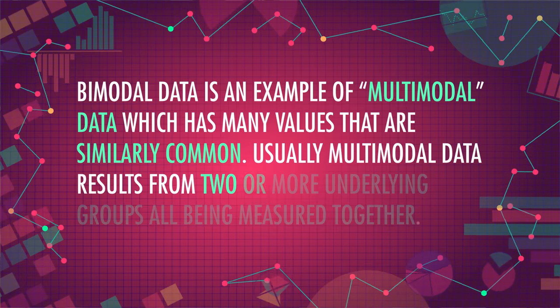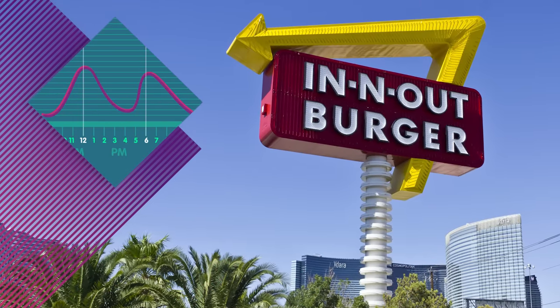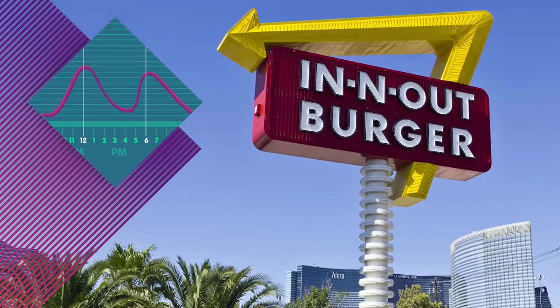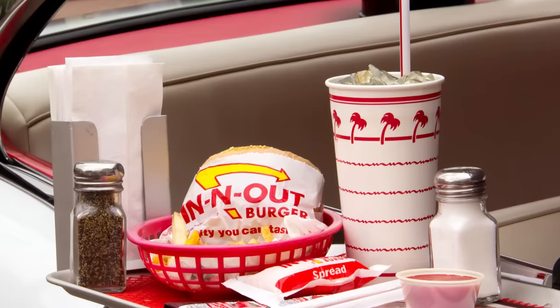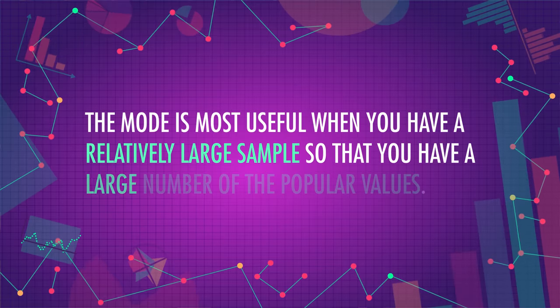Bimodal data is an example of multimodal data, which has many values that are similarly common. Usually multimodal data results from two or more underlying groups all being measured together. In the case of our book, the two groups were the love-it 5-star group and the hate-it 1-star group. For another example, if we graphed the times customers went to In-N-Out, we'd probably see two peaks — one around lunch time and one around dinner time. The mode is useful here because it's an actual value that occurs in our data set, unlike the median and mean, which can give us numbers that don't actually occur. The mean time people come in may be 3:30pm, but that doesn't mean you should expect an overflowing restaurant in the afternoon. One other benefit of the mode is that it can be used with non-numeric data — like if I ask everyone their favorite color, I could have a mode of blue. There's no such thing as a mean or average favorite color.